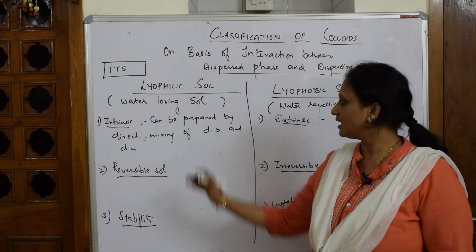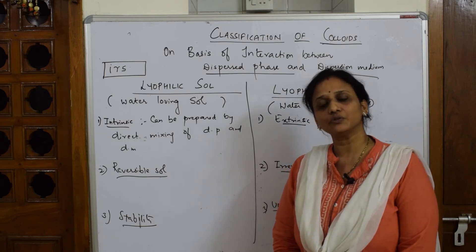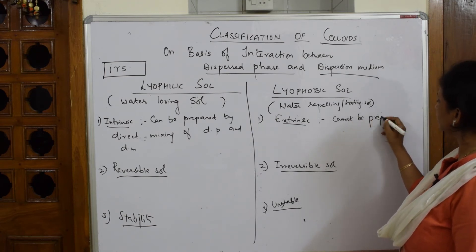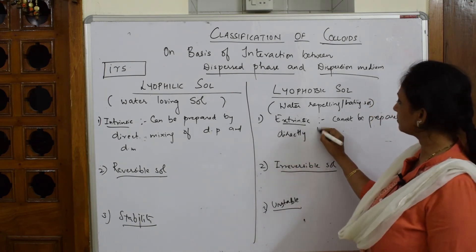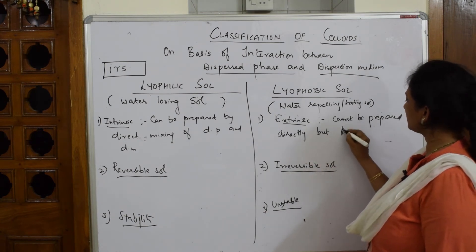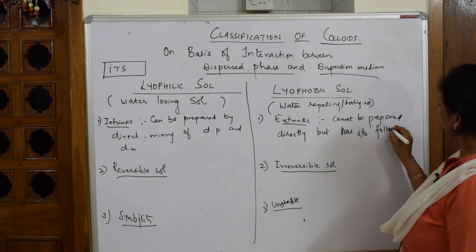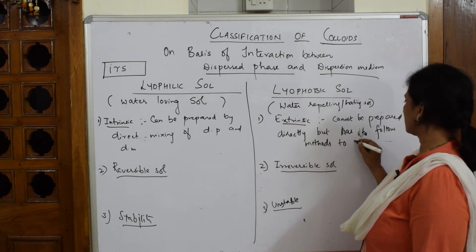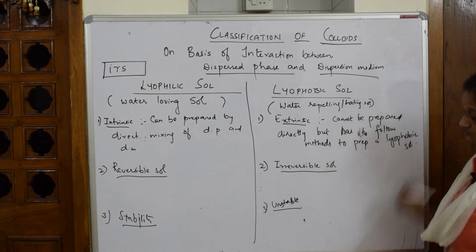Extrinsic means lyophobic sols — like ferric hydroxide — cannot be prepared directly as we did with starch. They require indirect methods. So extrinsic means they cannot be prepared directly but have to follow specific methods to prepare a lyophobic sol.